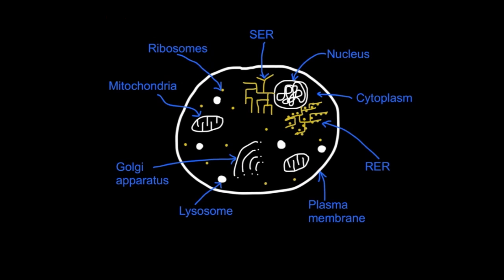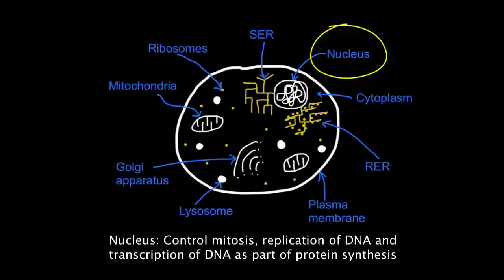The other organelles are membrane-bound. A eukaryotic cell has a nucleus which controls the cell's activities, including mitosis, DNA replication, and DNA transcription as part of protein synthesis.